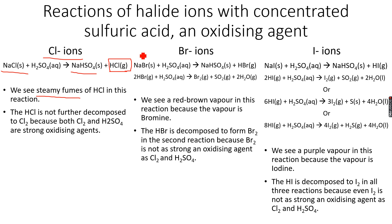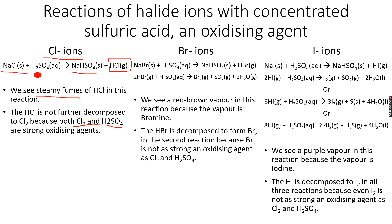HCl does not further decompose to form Cl₂ because Cl₂ and concentrated H₂SO₄ are both very strong oxidizing agents. If H₂SO₄ were to oxidize HCl to Cl₂, that would not be feasible because Cl₂ wants to form Cl⁻, and Cl⁻ does not want to form Cl₂. So even though H₂SO₄ is a powerful oxidizing agent, it is not powerful enough to oxidize HCl to Cl₂.